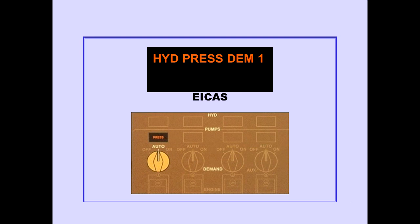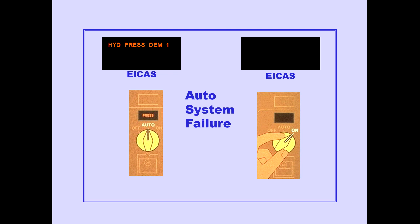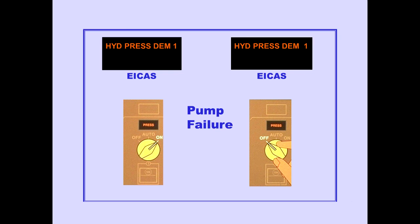The ICAS Advisory Message Hydraulic Pressure Demand is displayed when a demand pump has been commanded on and the pump output pressure is low. The demand pump low pressure light illuminates. If there is an auto system failure, rotating the demand pump selector on removes the demand pump hydraulic message and extinguishes the demand pump low pressure light. If the demand pump has failed, the hydraulic pressure demand message will remain displayed and the low pressure light will remain illuminated. Rotating the demand pump selector off prevents possible pump damage and contamination to the system.